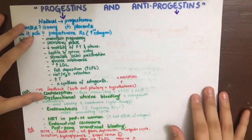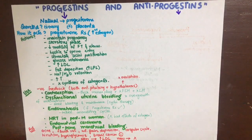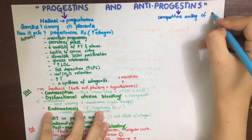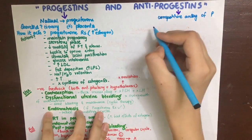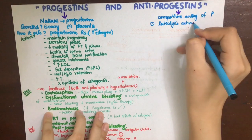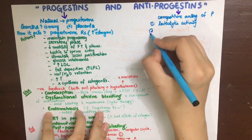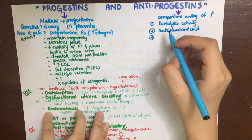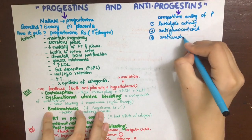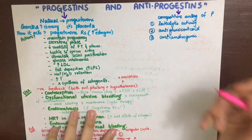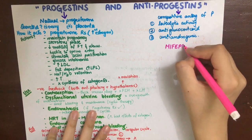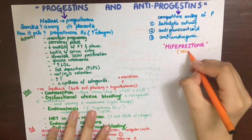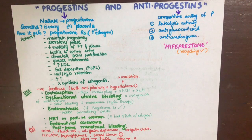Finally, let's see antiprogestins. Antiprogestins are competitive antagonists of progestins. They have luteolytic property — that is, they destroy the corpus luteum. They also have anti-glucocorticoid and anti-androgenic properties. The chief antiprogestin, and the only drug you need to remember, is mifepristone, which undergoes enterohepatic circulation.